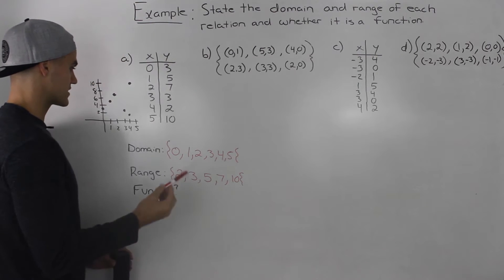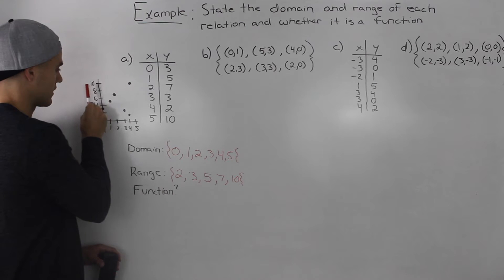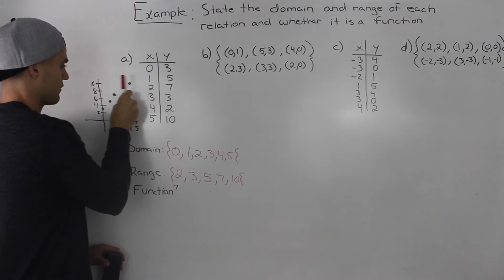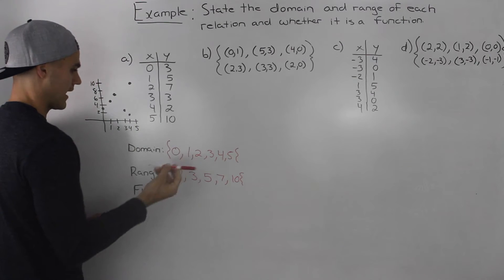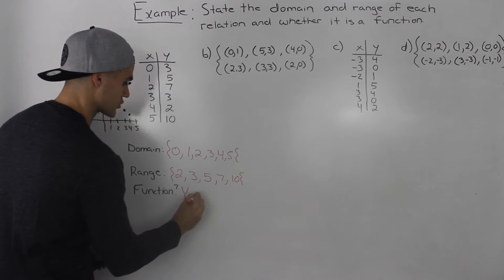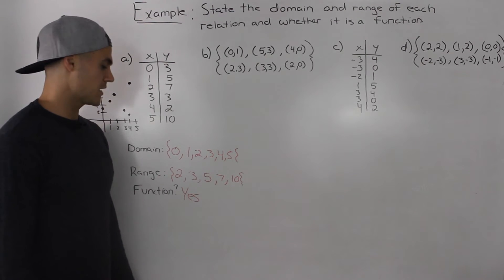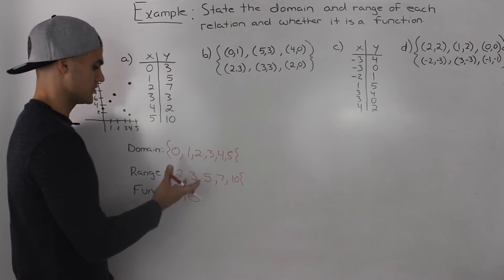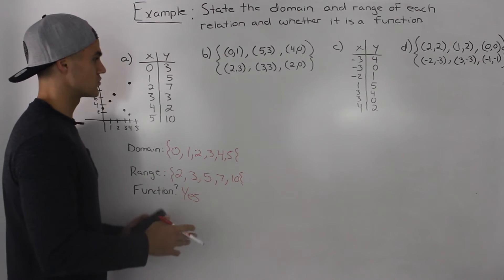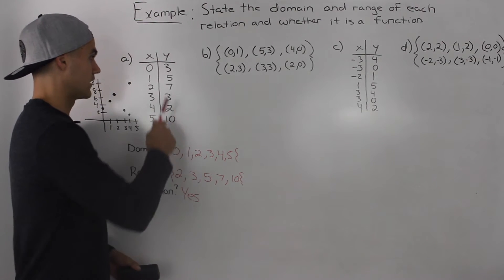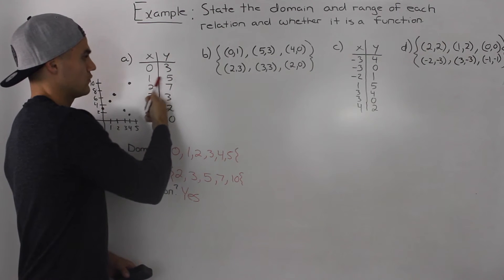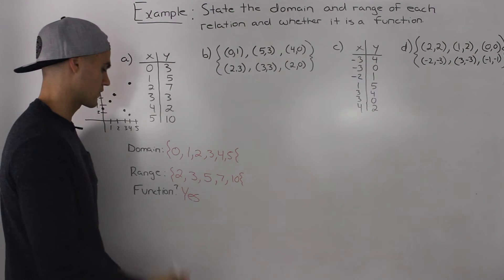We can apply the vertical line test on the graph — if there's any point where the vertical line hits two points on the graph. It doesn't, so it passes the vertical line test and it is a function. You can also tell from the table of values: there are no x values repeating, so there's only one y value for every x value, therefore it is a function.